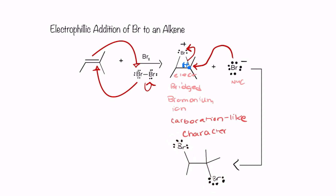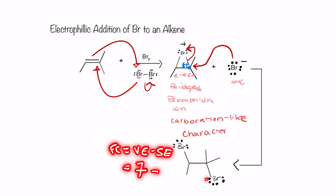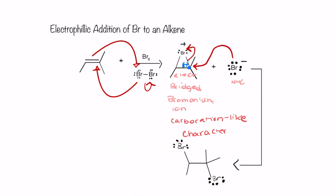The bromide used its lone pair to form that new bond between it and carbon, so now it only has three lone pairs left. If we go ahead and recalculate the formal charges for these bromine atoms, both have three lone pairs and one bond. Formal charge equals valence electrons minus surrounding electrons: bromine has seven valence electrons, and surrounding it is a total of seven surrounding electrons, giving a total charge of zero. So both bromines in the product are neutral.